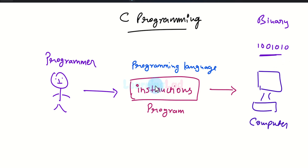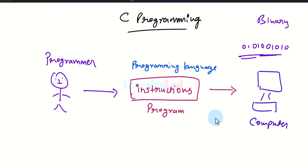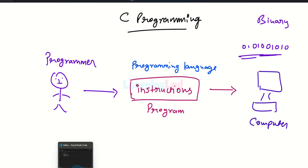Now, if computers understand only the binary language, are we going to write the program in zeros and ones? The answer is no. If we had to write programs as only a sequence of zeros and ones, it would be extremely difficult for us to write the instructions. Instead, we write instructions or programs which are close to human-readable format.